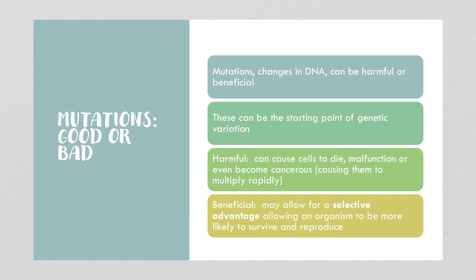A harmful mutation might cause the cells to die, malfunction, or even become cancerous — causing the cells to reproduce too quickly before they get a chance to develop and specialize the way they should. A beneficial mutation might allow for a selective advantage, allowing an organism to be more likely to survive and reproduce. For instance, if it were advantageous to be six feet tall, a mutation that made you six feet tall might cause you to be favored to survive, while those without that trait would not.